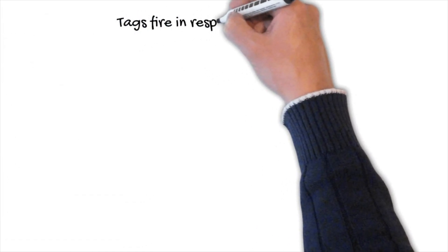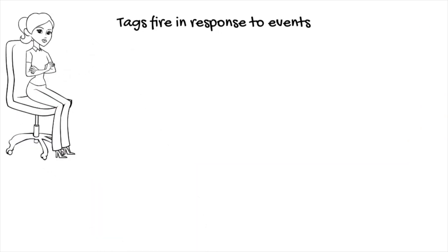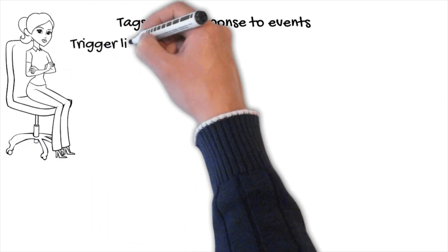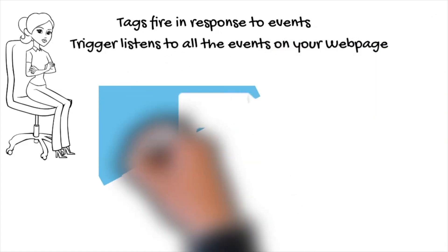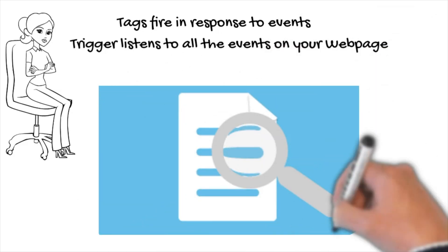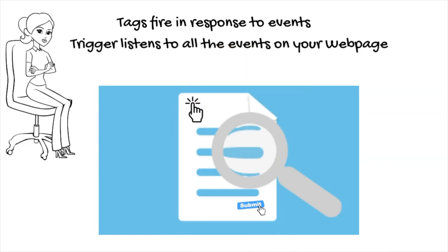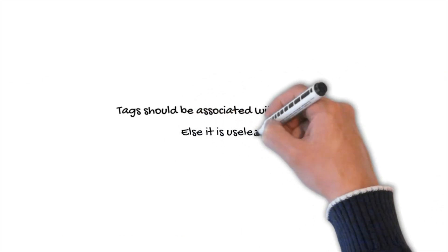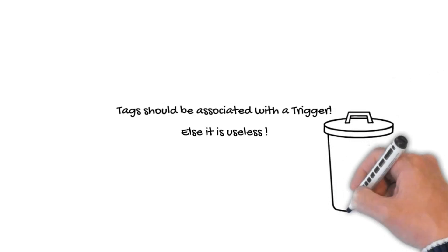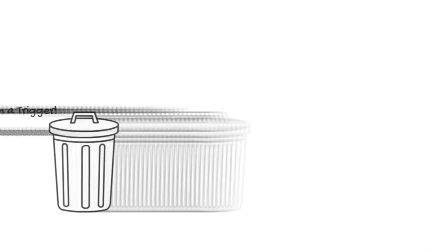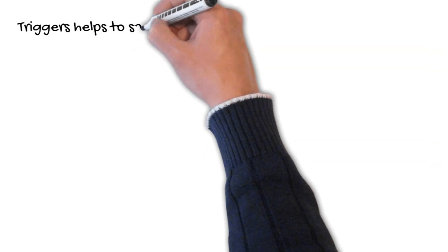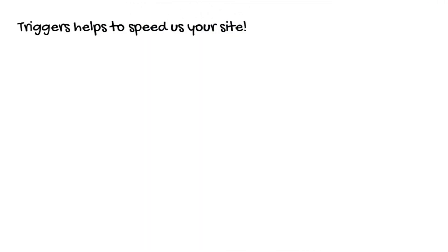Tags fire in response to events. In Google Tag Manager, the trigger listens to all events on your web page — whether it's a form submission, a page view, or a click. The trigger listens to all events on your page and decides when to fire a particular tag. Each tag must be associated with a particular trigger, or else it would never fire — a tag without a trigger is essentially useless.